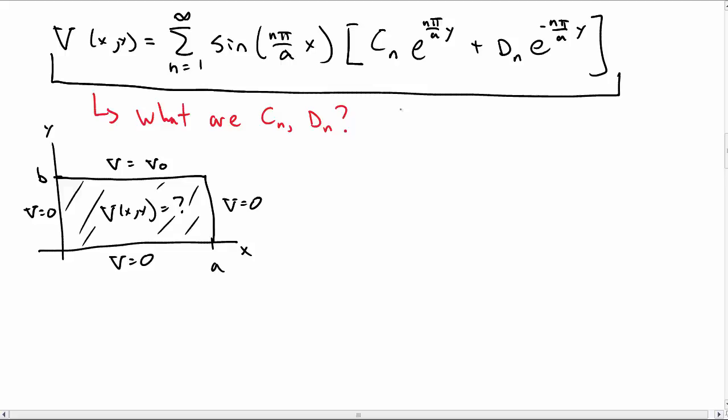In a previous video we solved Laplace's equation in two dimensions including boundary conditions in the x-direction where V is equal to 0 at 0 and a, and we came up with this general solution. But what we want to figure out now are what are the C_n's and D_n's in order to move forward.